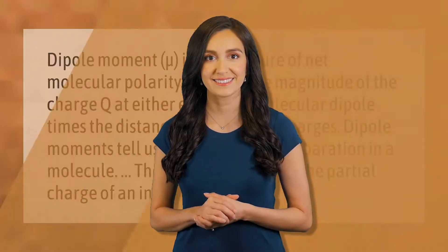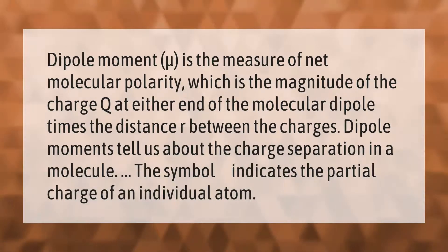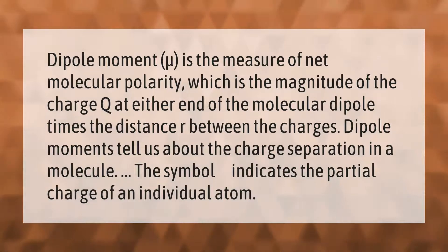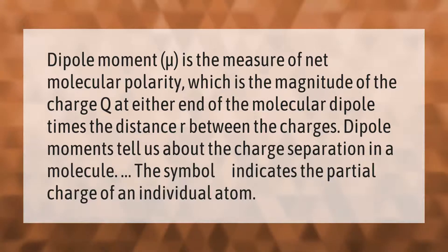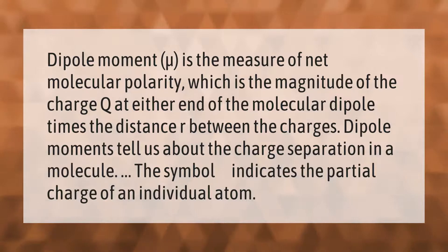Dipole moment (μ) is the measure of net molecular polarity, which is the magnitude of the charge (q) at either end of the molecular dipole times the distance (r) between the charges. Dipole moments tell us about the charge separation in a molecule. The symbol delta indicates the partial charge of an individual atom.